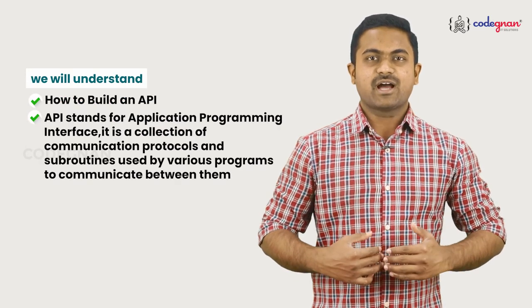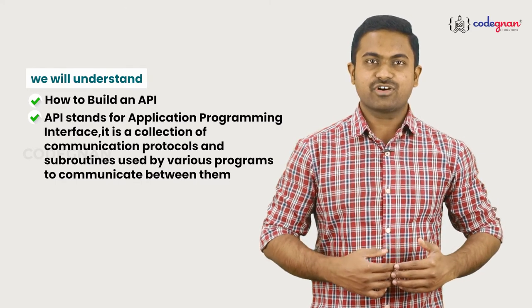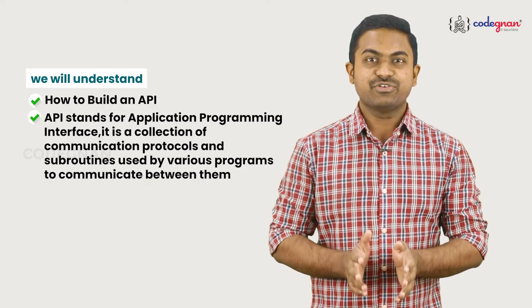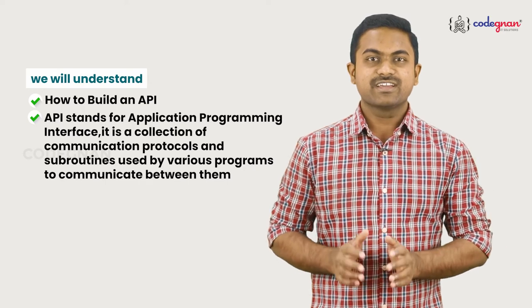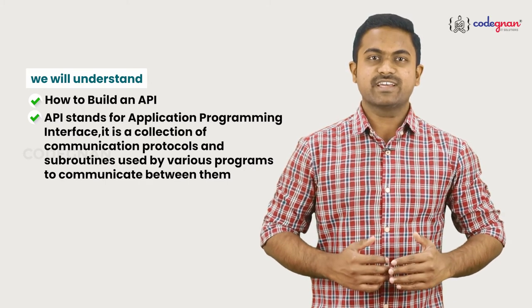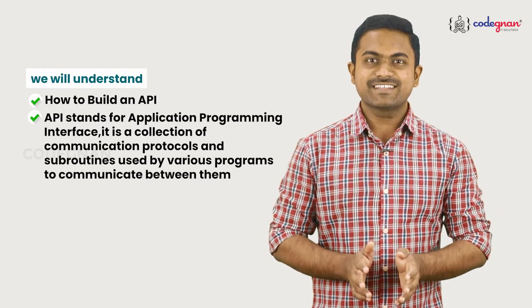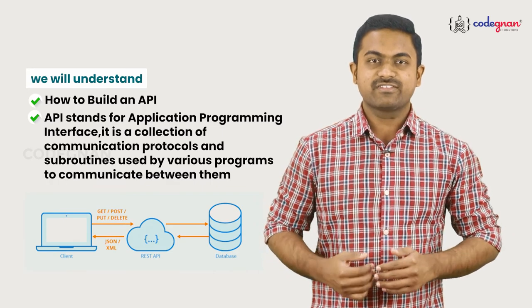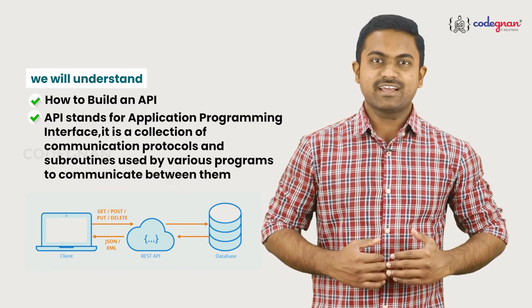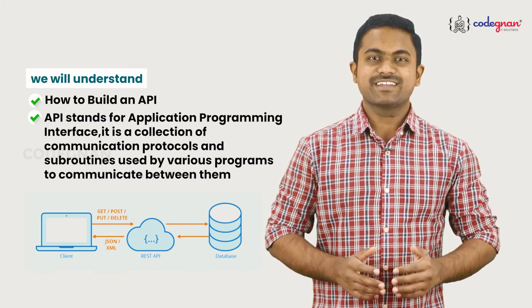API stands for Application Programming Interface. It is a collection of communication protocols and subroutines used by various programs to communicate between them. A programmer can make use of various API tools to make their program easier and simpler. In a sense, an API acts as a communication layer — an interface that allows different systems to talk to each other without understanding exactly what each other does.